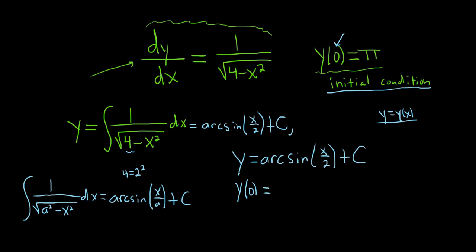This is equal to the arc sine of x over 2. So x here is 0. So 0 over 2 is 0. Then we have our capital C. The arc sine of 0, and this is equal to pi. Y of 0 is equal to pi. So I almost forgot that. Arc sine of 0 is 0. So we get 0 plus C equals pi. That means that C is equal to pi.